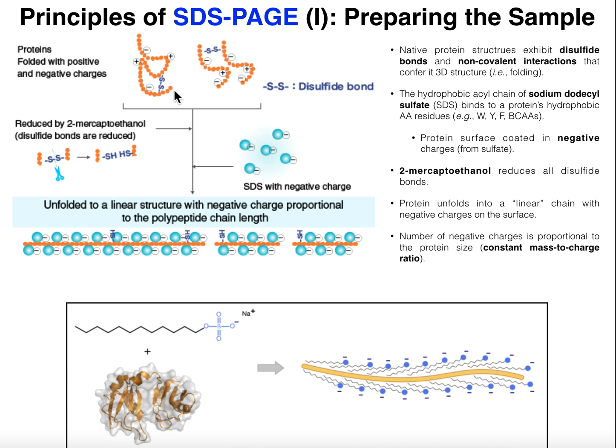There are really three things we need to do to cause proteins to denature completely. One is we have to heat the sample, because heat causes proteins to unfold and denatures them — but that's not going to accomplish it completely. We also need to add sodium dodecyl sulfate, or SDS.